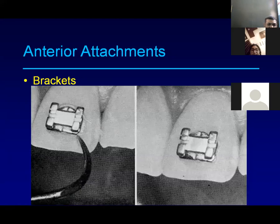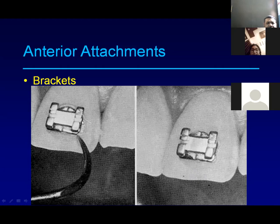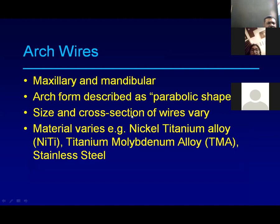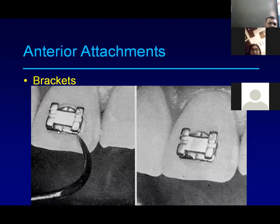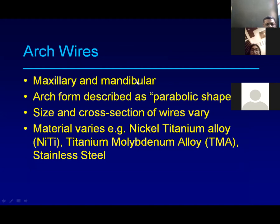Anterior attachments are the brackets placed in the anterior segment from second premolar to second premolar. The bracket has one wing, a second wing, and the slot in between. Arch wires come in different arch forms — parabolic, oval, elliptical — because everyone has a different arch shape; you cannot use the same arch wire for every patient. Depending on the patient's arch form, you choose accordingly.